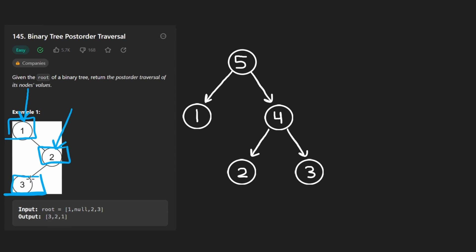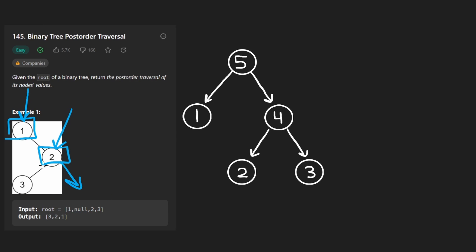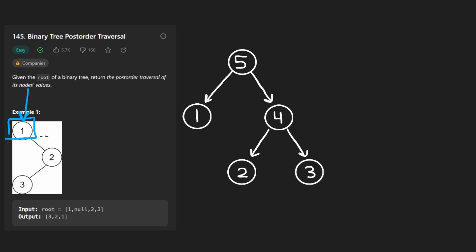Then we'd go back up to our parent two. We'd try to go right — there's nothing there, it's empty. So then we'd pop back up to the parent two, and finally we'd add two to the output. And then from here, we pop back up to our parent one and add one to the output. That's how we do it recursively.